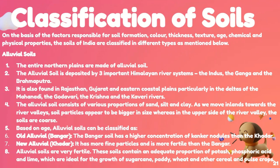We will first understand alluvial soil. The entire northern plain is made up of alluvial soil. The alluvial soil is deposited by three important Himalayan rivers: the Indus, Ganga, and Brahmaputra. It is also found in Rajasthan, Gujarat, and eastern coastal plains, particularly in the deltas of the Mahanadi, Godavari, Krishna, and Kaveri rivers.